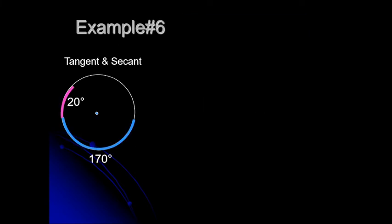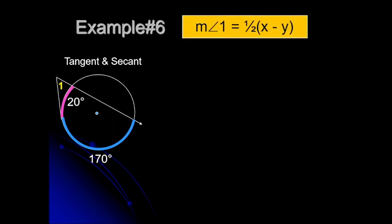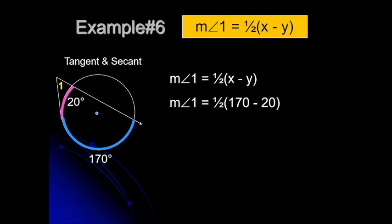For Example 6, an angle is formed by a tangent and a secant intersecting outside the circle. We apply the same Theorem 2: subtract the two intercepted arcs, which are 170 degrees and 20 degrees. The measure of angle 1 equals ½(170 − 20) = ½(150) = 75 degrees.